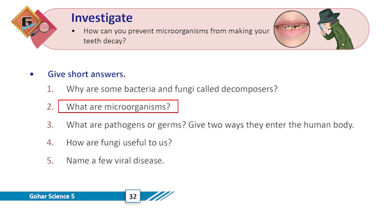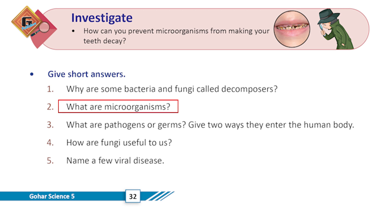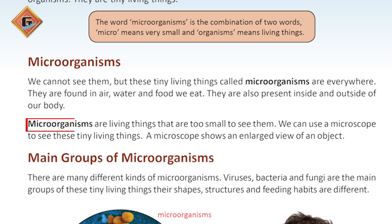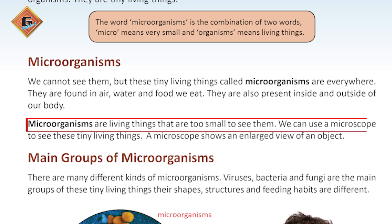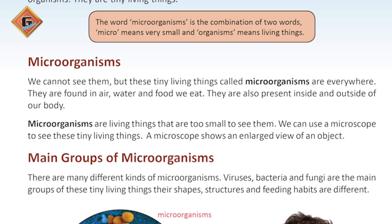What are microorganisms? You know what microorganisms are — they are too small to see with the naked eye. We call them very small living organisms. Microorganisms are living things that are too small to see, and we can use a microscope to see these tiny living things.